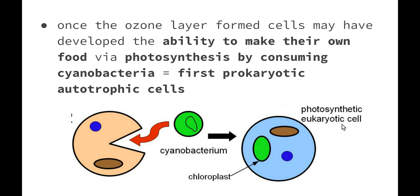Once the ozone layer formed, cells may have developed the ability to make their own food via photosynthesis by consuming cyanobacteria, which were basic prokaryotic cells. This ended up creating the first prokaryotic autotrophic cells. Prokaryotic, meaning we have no membrane-bound organelles, but autotrophic now being able to create their own food by photosynthesis.